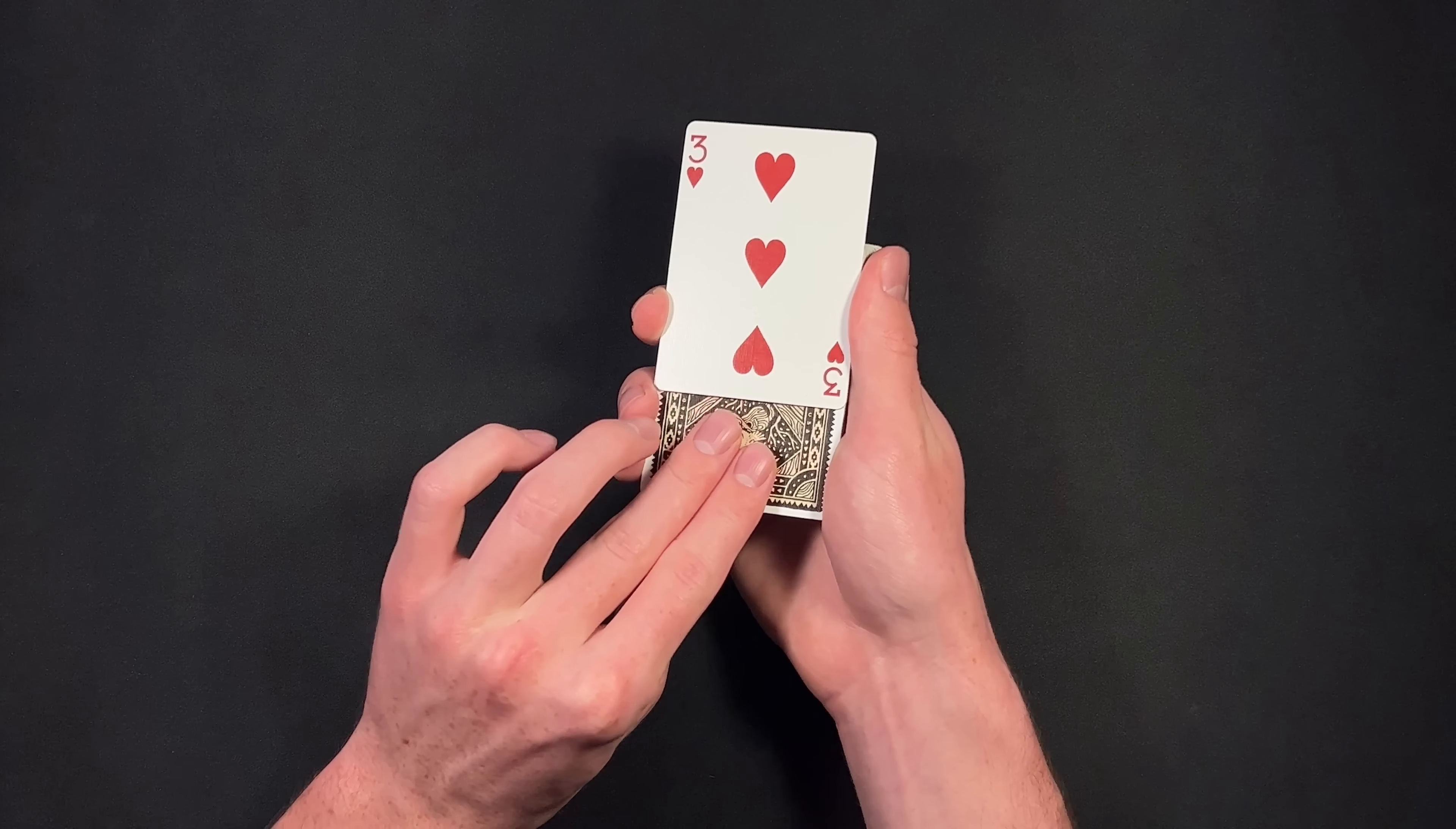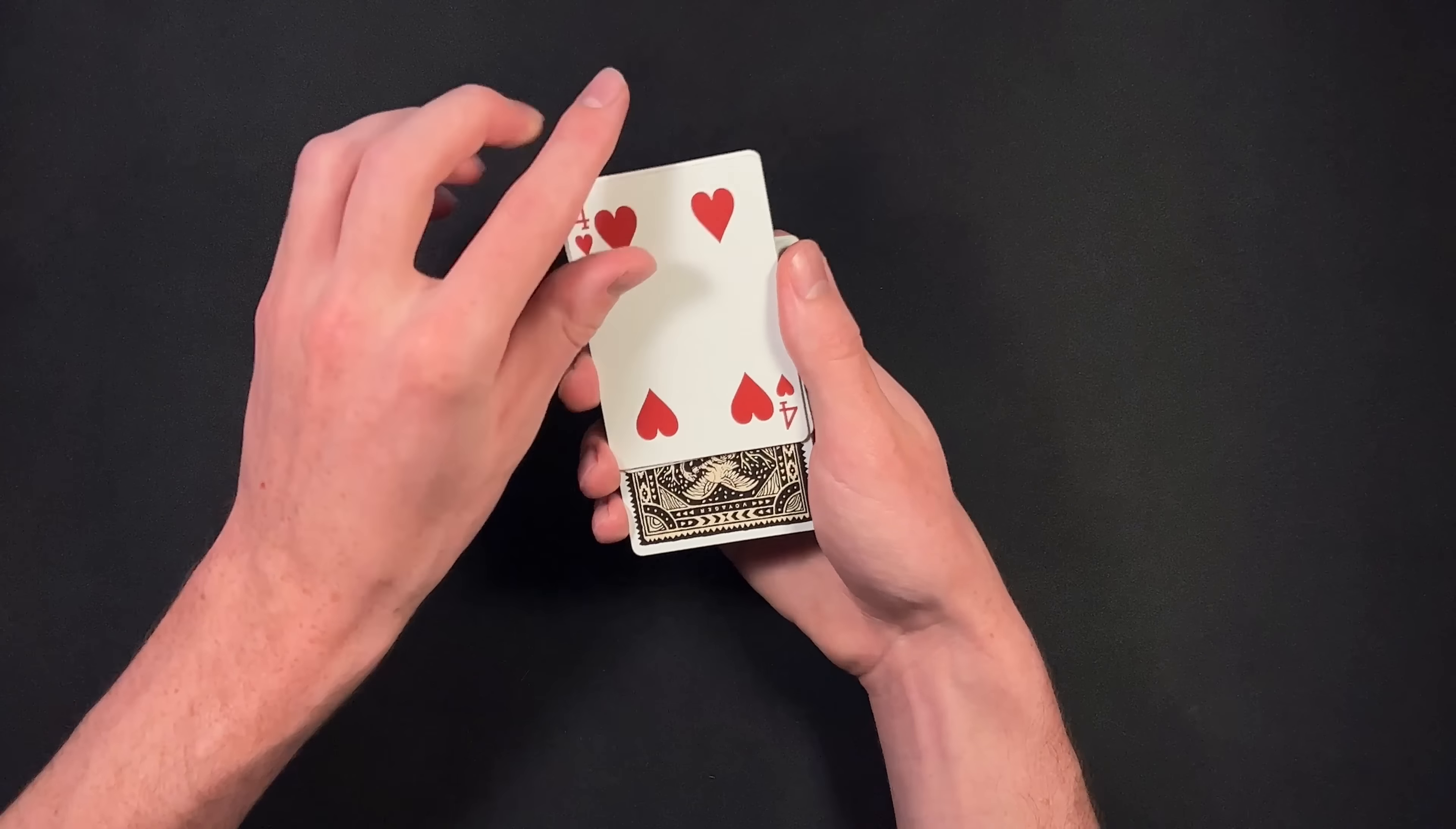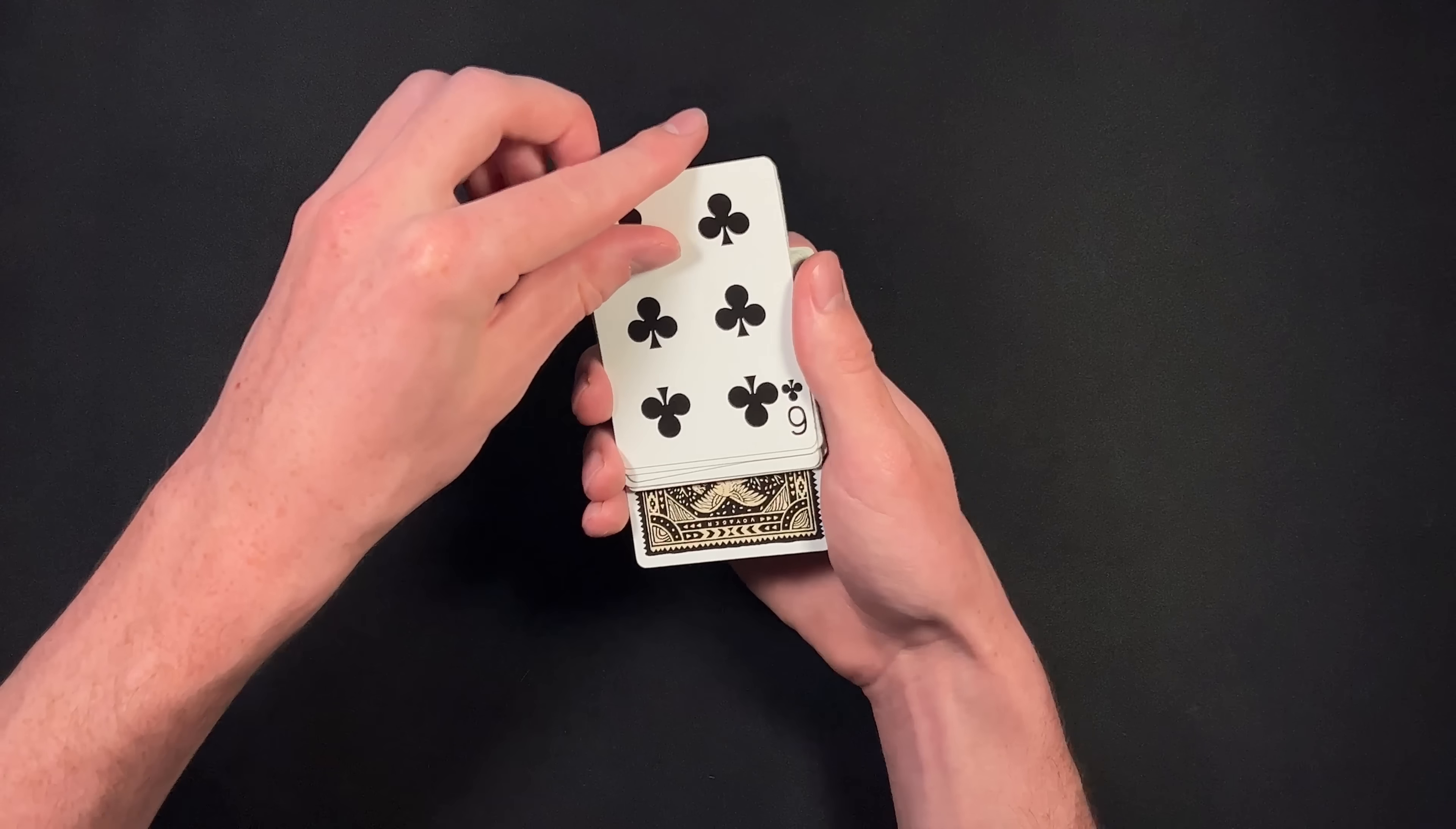Now what you're going to do is take off cards one at a time from below these two and you're going to place them right on top like this. You're going to be going through and be careful as you do this at the start that you don't accidentally flash their selection, which is reversed here. So you're going to keep going and you can make the point to your spectator. They can call stop at any point as you do this, which is true. You're just going to be going through one at a time, taking off cards here from the bottom of this out jogged pack and bringing them right on top face up.